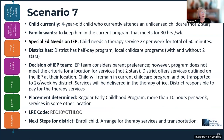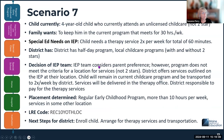In this scenario, a four-year-old child is currently attending an unlicensed childcare program — not a two-star program. The family wants to keep the child in that current program that meets for 30 hours per week, perhaps out of convenience or because other family members attend there. On the IEP, it says the child needs a therapy service two times per week for a total of 60 minutes — 30 minutes each.